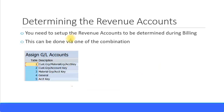You need to perform some configurations in the SD module to determine the revenue accounts. These revenue accounts can be determined by one of these combinations: customer group and material group and account key; customer group and account key; material group and account key; or account key alone. When I say customer group and material group, this actually means customer account assignment group, not the normal customer group. Similarly, when I say material group, it's the material account assignment group, not the material group.